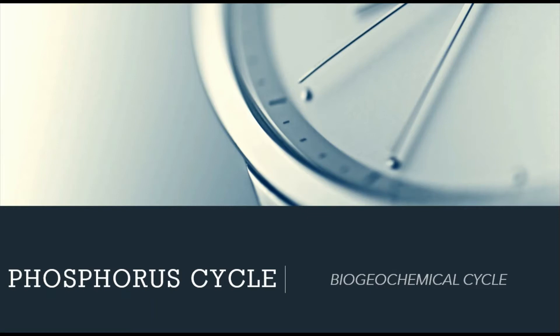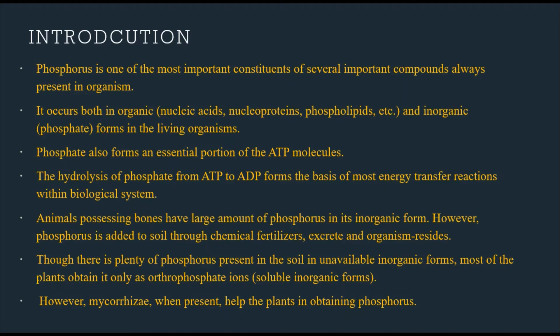Phosphorus is found in the soil, however the major storehouse of phosphorus is the rock deposits. Agricultural crops contain only 0.05 to 0.5 percent of phosphorus in their tissues, in the form of several compounds such as phytin, phospholipids, nucleic acids, phosphorylated sugars, coenzymes, and related compounds. Soil rich in organic matter contains abundant organic phosphorus.